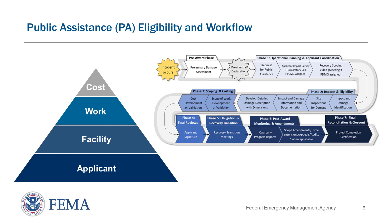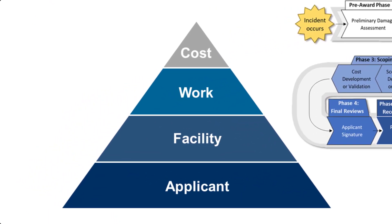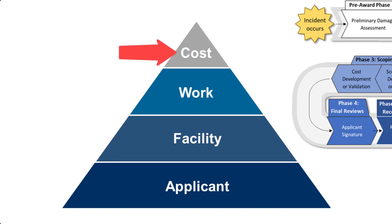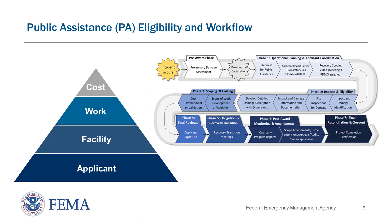Generally, FEMA must determine whether each building block on the eligibility pyramid is eligible, starting at the foundation with the applicant and working up to the top, the cost. The applicant is responsible for demonstrating that each component of the pyramid is eligible by providing documentation to substantiate that eligibility. FEMA may issue a DM based on the applicant's supporting information and documentation provided to FEMA.